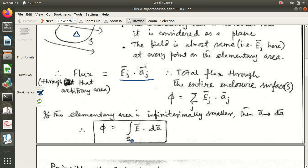And you know, for infinitesimally small area, we convert the summation sign by an integration sign. So, the total flux will be, integration over the entire surface, E dot DA, that is the definition of flux.